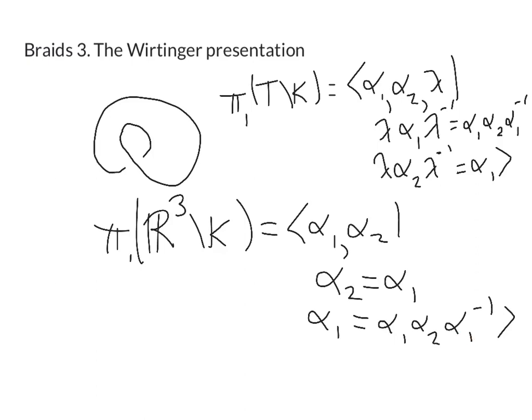So in other words this group really just has one generator and no relation, so we get ℤ, which is the fundamental group of the complement of the unknot. So you can do some more non-trivial examples by yourself using what we already worked out about the Artin action of braids on free groups and using the Wirtinger presentation we've just seen.